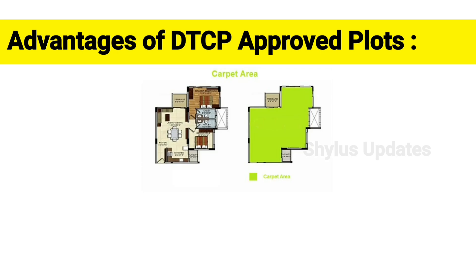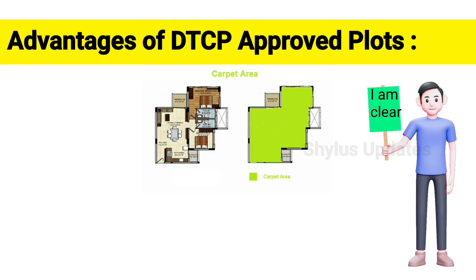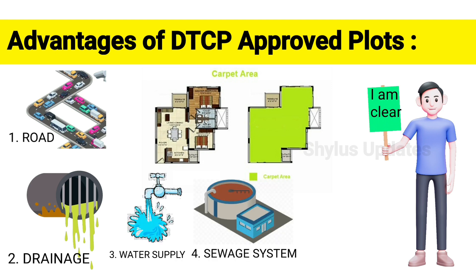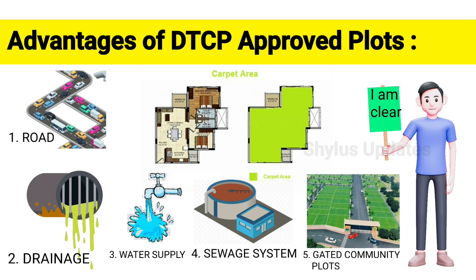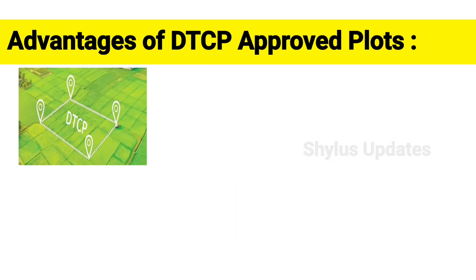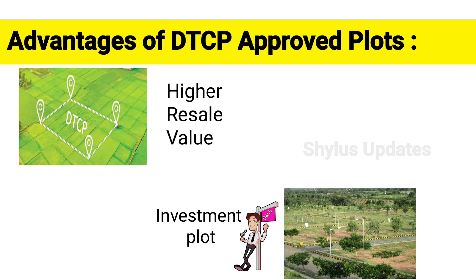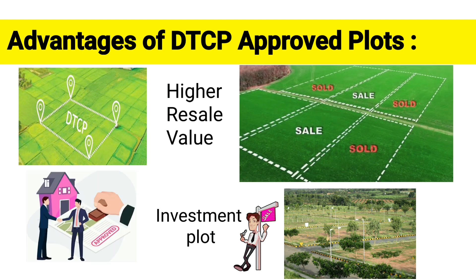DTCP approval helps the buyer be clear about the necessary infrastructure around the plot and facilities for living, such as roads, drainage, water supply, sewage system, gated community plots, and other amenities necessary for living. Most buyers prefer DTCP approved plots as they have a higher resale value because they are investment plots. If they want to sell the plot or villa, DTCP certification makes it easier to do so in its current state without negotiation.